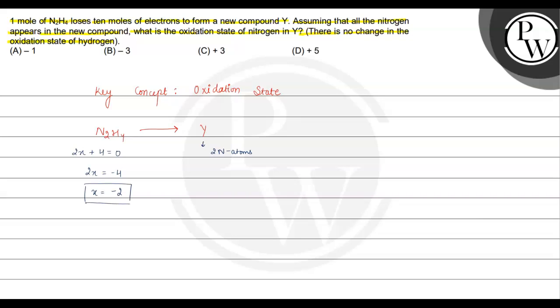Now, 1 mole of N2H4 loses 10 moles of electrons. In 1 mole of N2H4, there are 2 moles of nitrogen atoms.